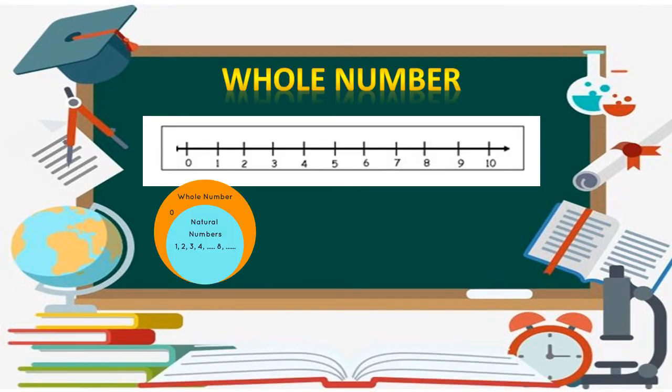Here you see the whole numbers. What are the whole numbers? On the number line you see that zero is not a counting number, and further on, one, two, three, four, five, six, seven, eight, nine and ten are counting numbers and they are also called natural numbers. So the combination of zero and natural numbers or counting numbers are called whole numbers.